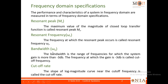The next specification is bandwidth. Bandwidth is the range of frequencies for which the system gain is more than minus 3 dB. The frequency at which the gain is minus 3 dB is called the cutoff frequency. Another specification is cutoff rate — the slope of the magnitude curve near the cutoff frequency is called the cutoff rate.